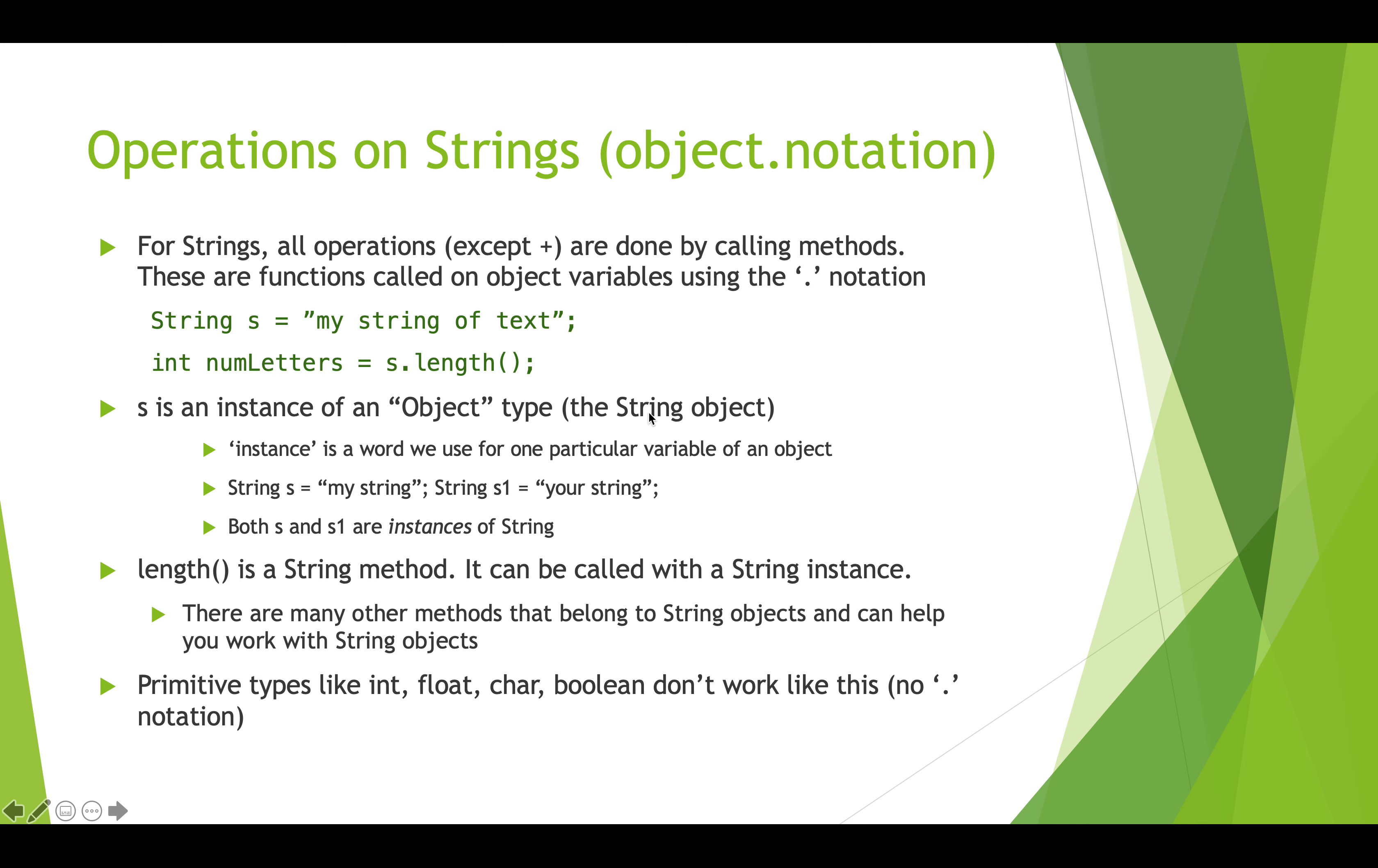Let's dissect this a little bit. S is what we call an instance of the object string. Instance is a word we use for one particular variable of an object. S and S1 are both instances of the string object. Length is a method that can be called on strings, and there's many other methods. Primitive types that we've seen already, int, float, char, boolean, they don't work like this. They don't have this dot notation. The dot notation is only for objects. In this line, int numLetters is the variable we're creating to capture the return value or the result of this method. S is our instance of string, and length is the actual name of the method that works on string instances. This particular method doesn't take any parameters, so we have empty brackets.